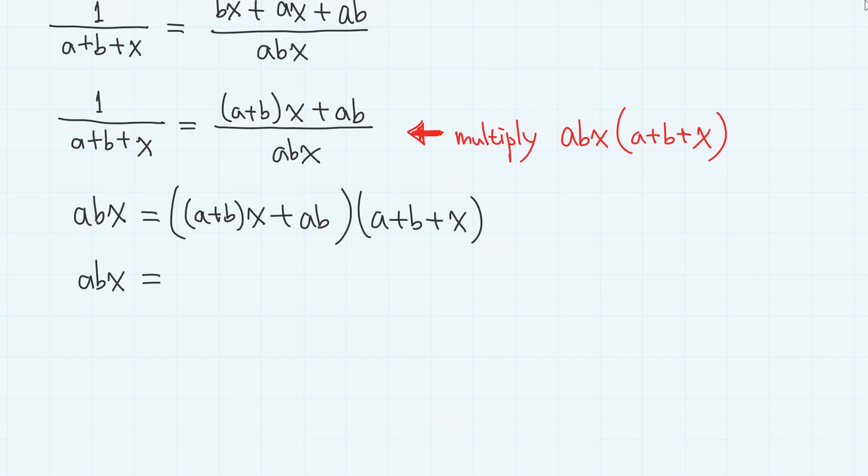Here, let us expand the right-hand side. So first, this times this gives a plus bx squared. And this times this gives a plus b squared x. And this times this gives abx. And this times this gives ab a plus b.